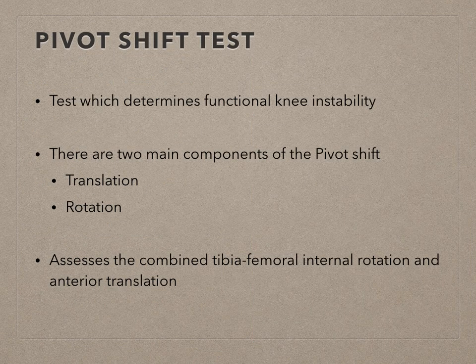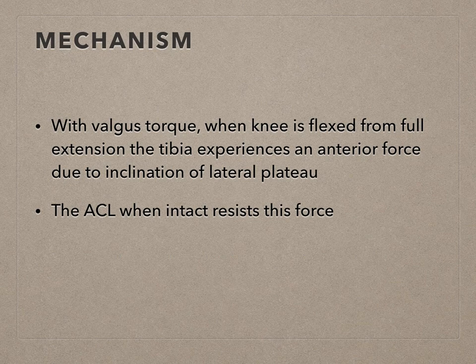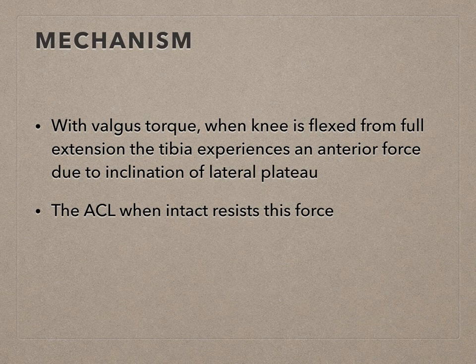Coming to the pivot shift — this has been discussed in great detail in the last session. This is a test which determines functional knee instability. There are two main components of the test: translation and rotation, and it is helpful to assess the combined tibial-femoral internal rotation and anterior translation. Regarding the mechanism, with valgus torque when the knee is flexed from full extension, the tibia experiences an anterior force due to the inclination of the lateral tibial plateau. This is very important.